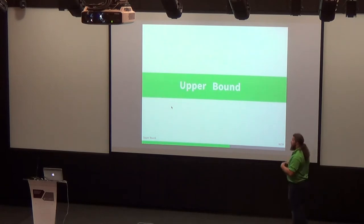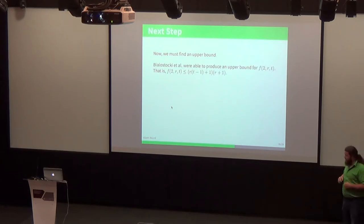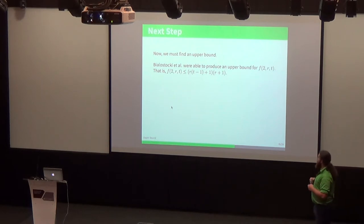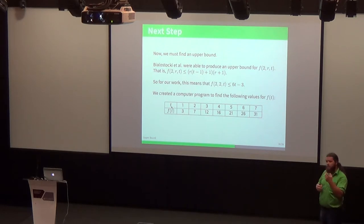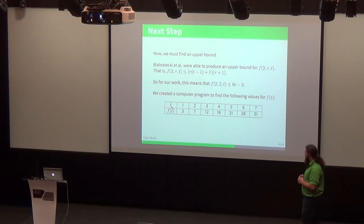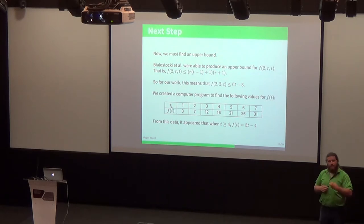So we have a lower bound, now we want to find an upper bound. Bialostocki, Erdős, and Lefman in 1995 were able to produce an upper bound for f(2,r,t), and if we fixed that r value to be 2, that reduces to 6t minus 3. We wrote some computer code to try to figure out if we could shrink that down a little bit, if we could improve on that value. We started and inputted different values for t and ran this computer code, and started to notice a pattern starting around t equals 4. It looked like once we hit that value of 4, that f(t) was going to be equal to 5t minus 4.